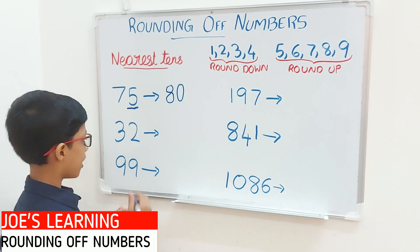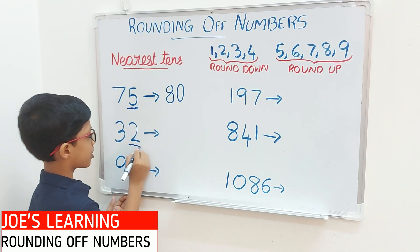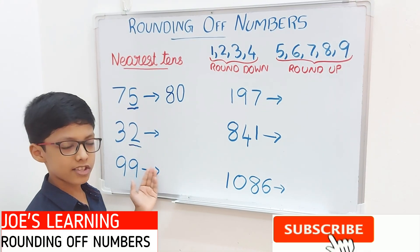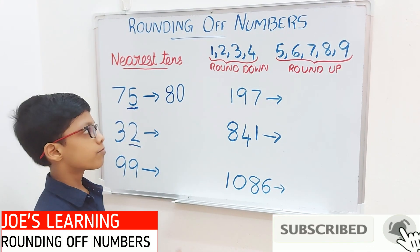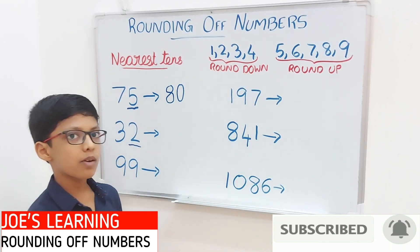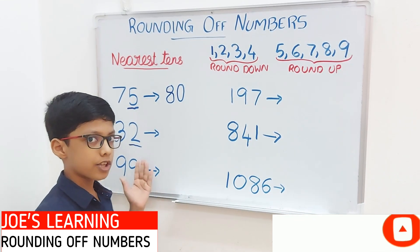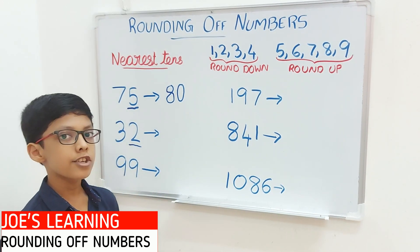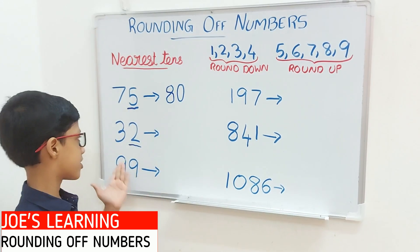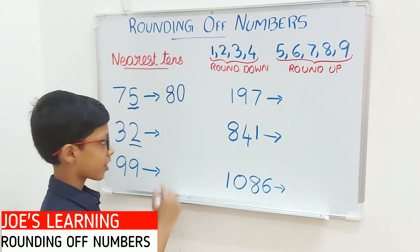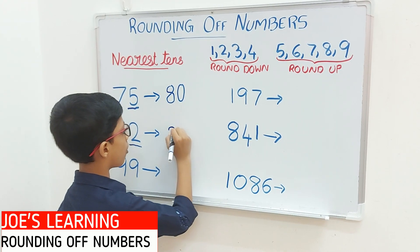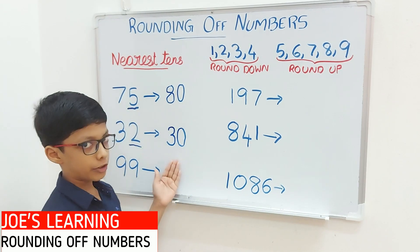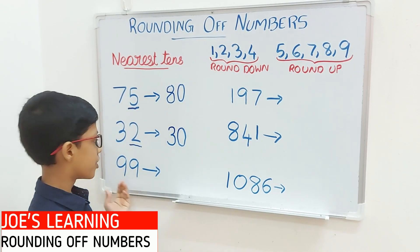Now let's try with the example 32. Again we need to look at the digit in the 1's place. In this case, 2 is in the 1's place. So we have to round downwards, and round this number to the tens that is before the number. The tens before this number is 30. So 32 rounded off to the nearest tens equals 30.